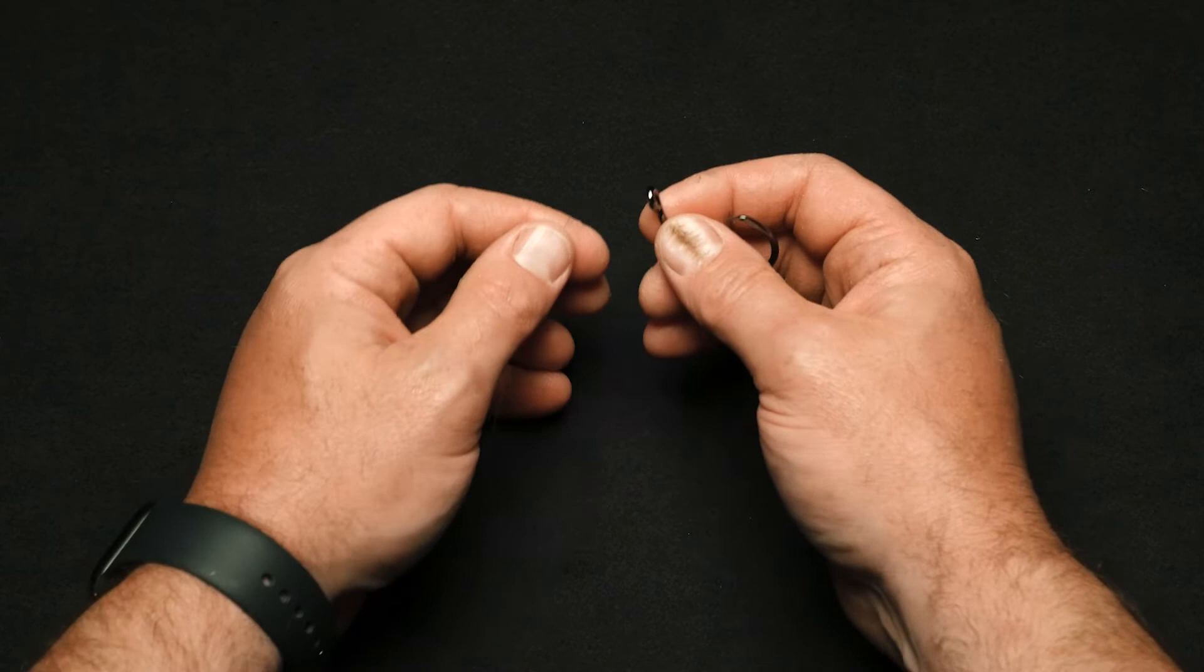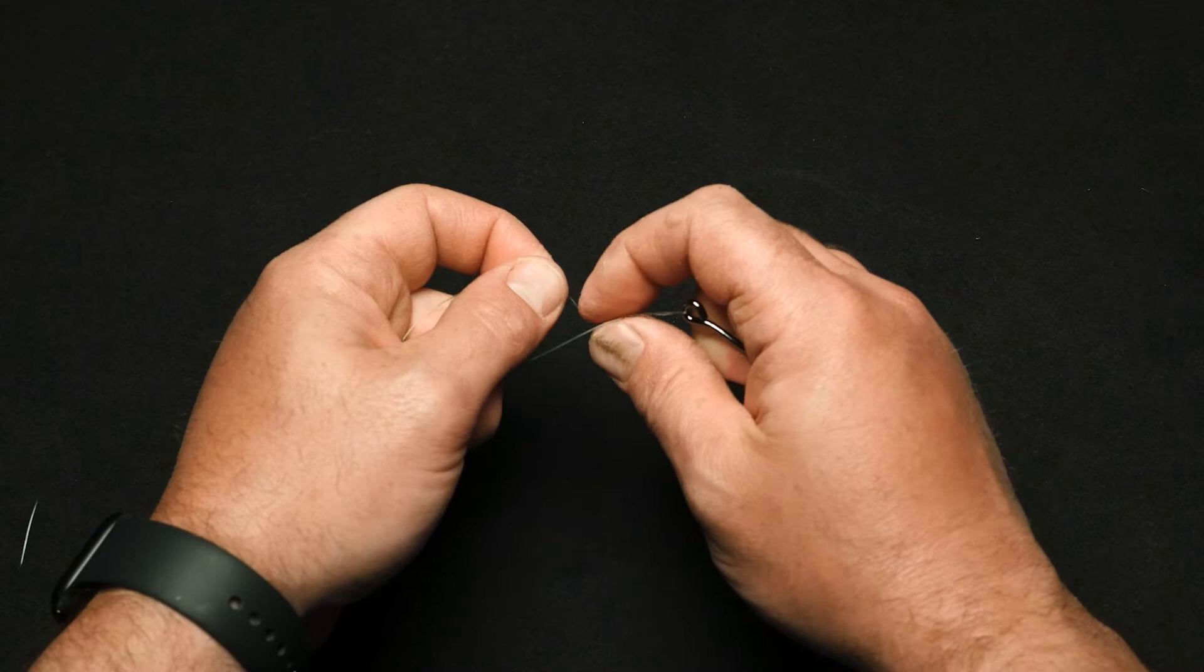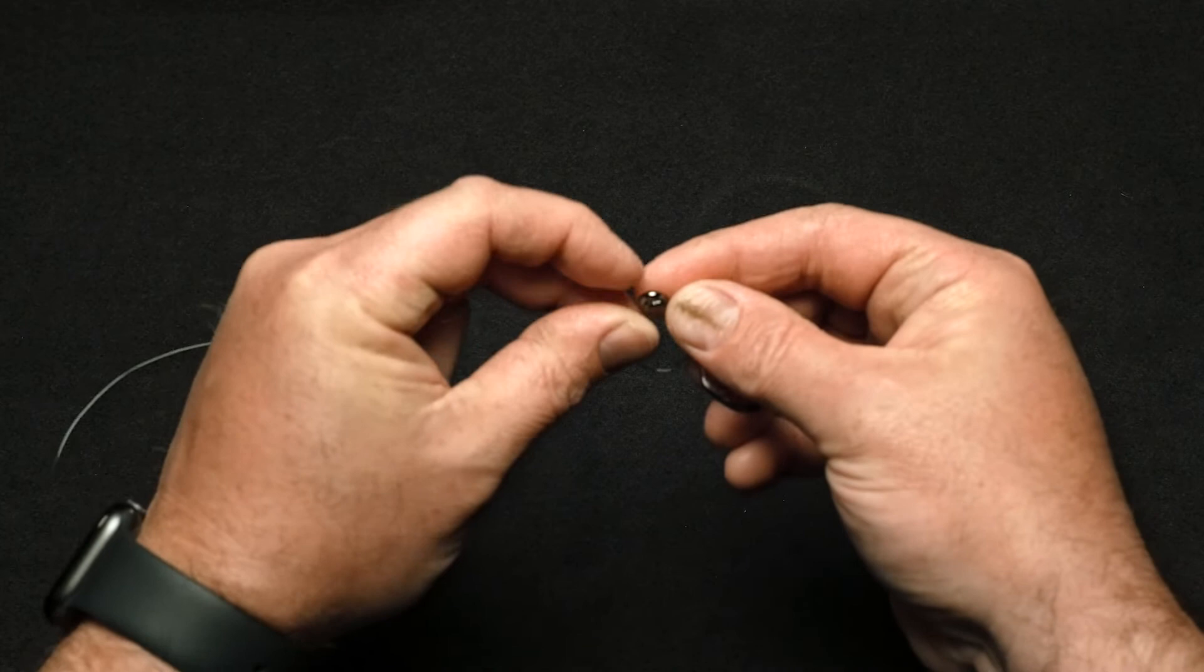First, thread the end of the line through the eye of the hook. Double back and make five or more turns around the standing line. Bring the end of the line through the first loop formed behind the eye and then through the bigger loop.